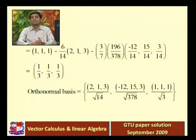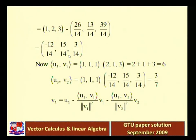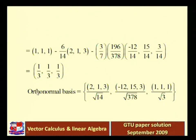Now v1, v2, v3 are orthogonal basis vectors, but not yet orthonormal. We convert to orthonormal basis vectors by dividing each by its norm. v1 = (2,1,3), v2 = (−12/14, 15/14, 3/14), v3 = (1/3, 1/3, 1/3). The final orthonormal basis vectors are: (2,1,3)/√14, (−12,15,3)/√378, and (1,1,1)/√3.